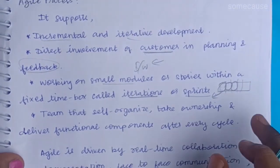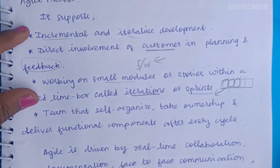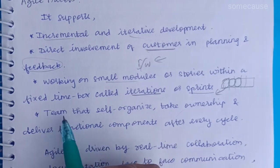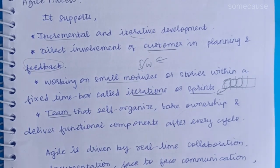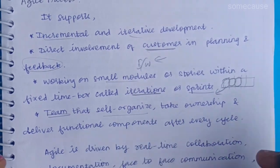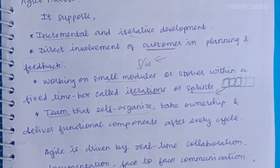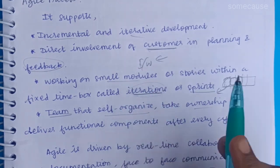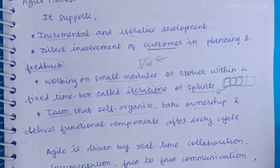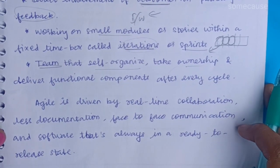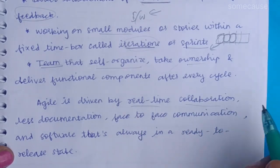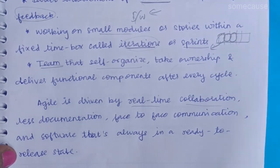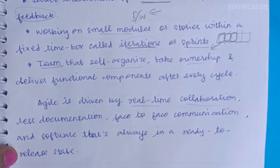In the Agile Process, our team is self-organized. One leader will guide, they will organize, they will work, and they will deliver on time. The Agile Process is a real-time collaboration — the team will work together and we can satisfy the goals.